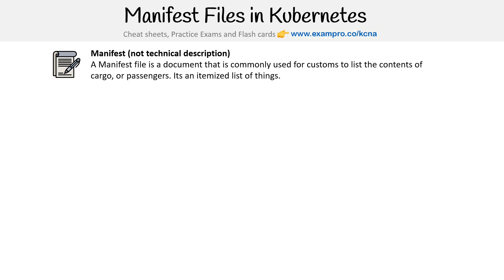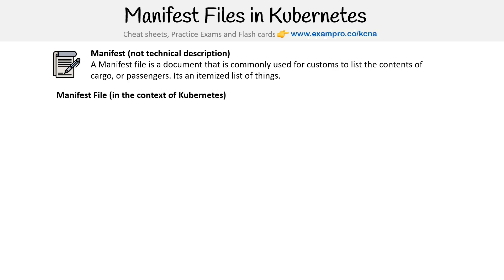So what is that in the context of Kubernetes? Well, a manifest file is a generalized name for any Kubernetes configuration file that defines the configuration of various Kubernetes components. The name will change — sometimes they'll call it a pod spec file, sometimes they'll call it a Kubernetes configuration file — but they're all manifest files. If you're listing this YAML stuff with Kubernetes components, they're all manifest files.